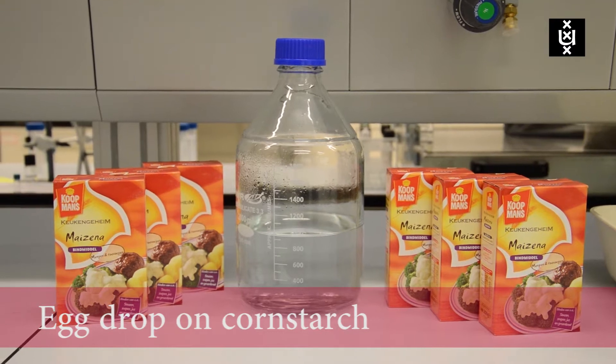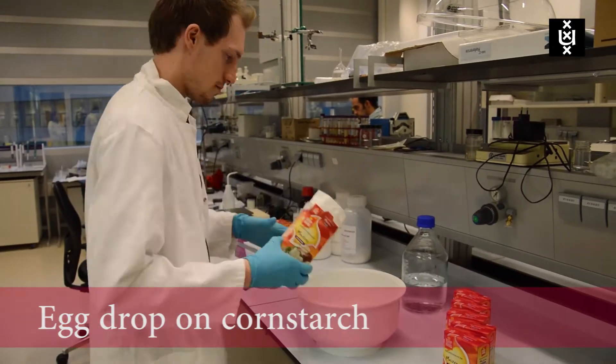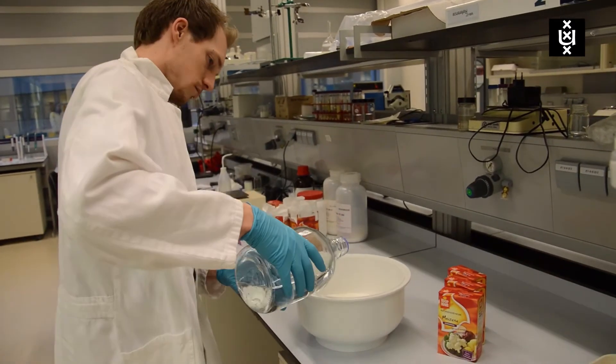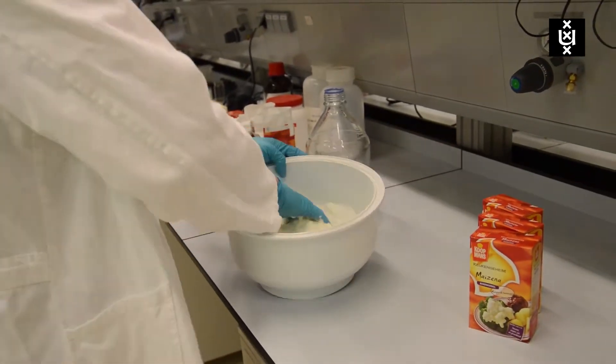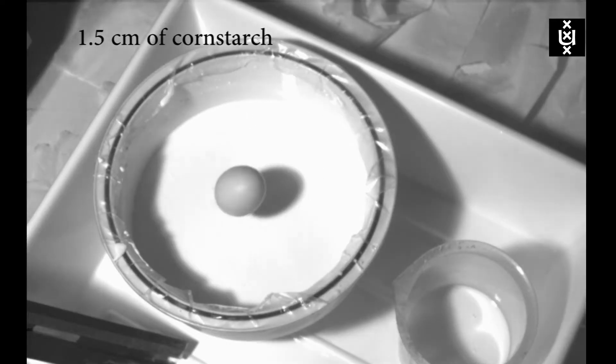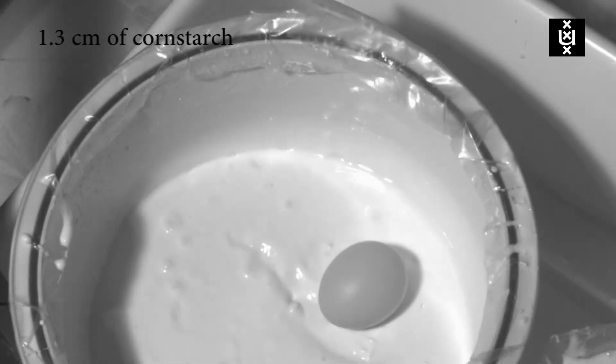So we take five parts of water and six parts of cornstarch and mix it together. As the egg hits the surface of our liquid the liquid starts acting like a solid, it becomes hard.